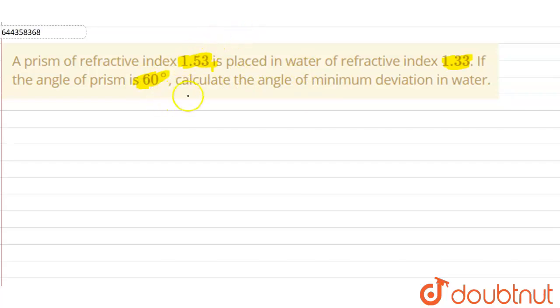The refractive index of the prism is 1.53 and the refractive index of water in which the prism is placed is 1.33. And the angle of prism is 60 degrees. We have to find the minimum deviation in the water.